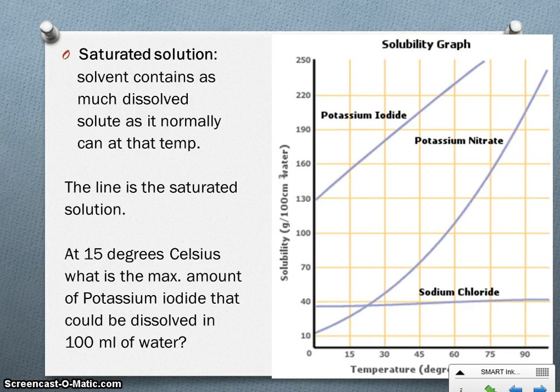Another word we can use now is saturated, meaning that water is holding as much sugar as it possibly can. It's full. On our solubility graphs, the line for each chemical represents the point of saturation. That represents when the solution is full and you can't dissolve anymore.